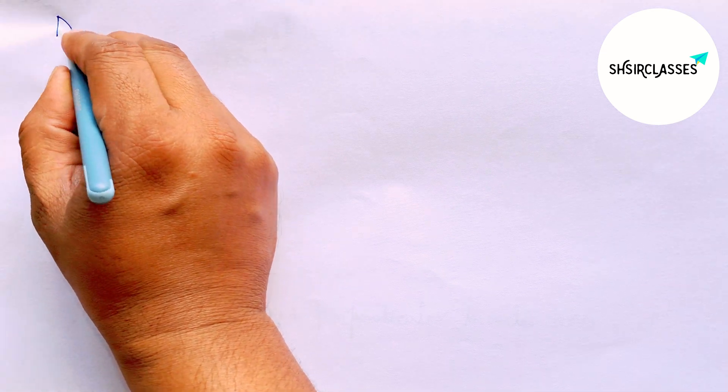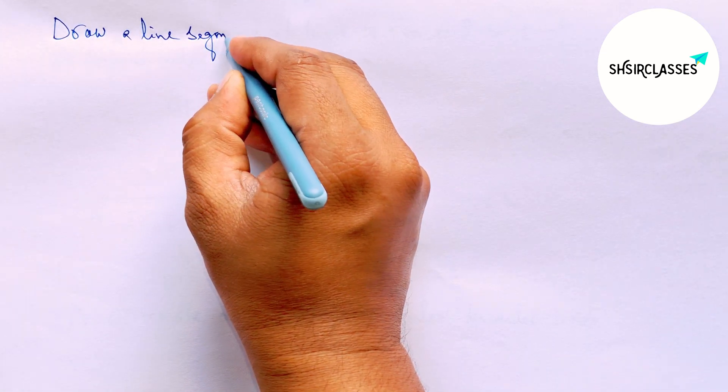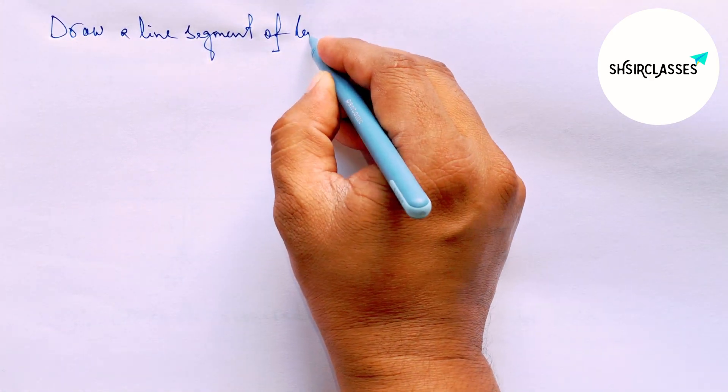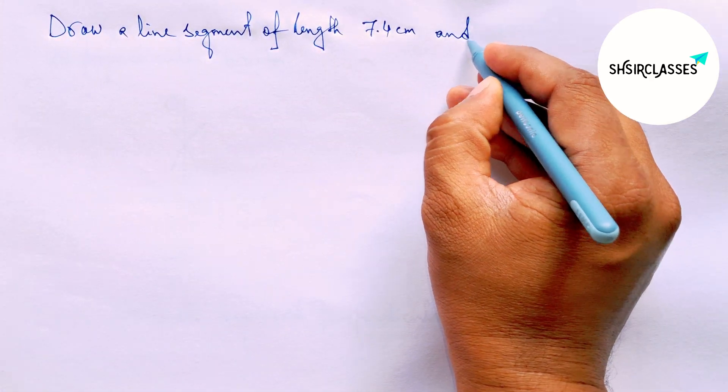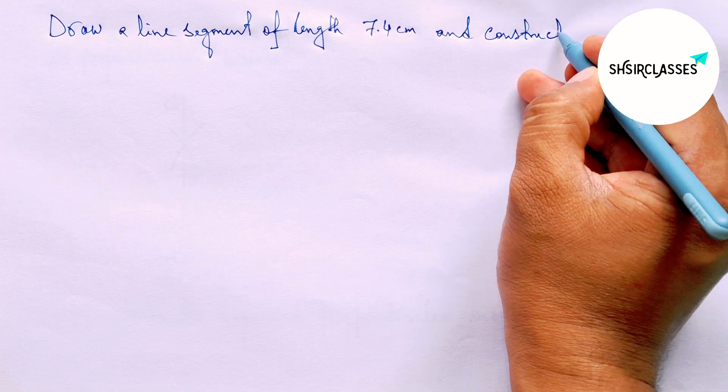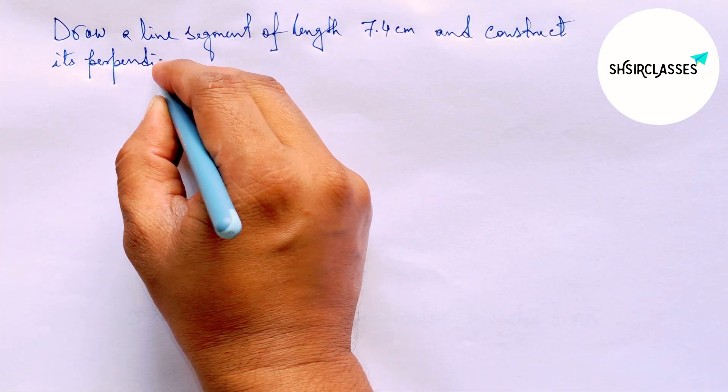Hi everyone, welcome to SSR classes. Today in this video, draw a line segment of length 7.4 centimeter and construct its perpendicular bisector to the given line in easy way.